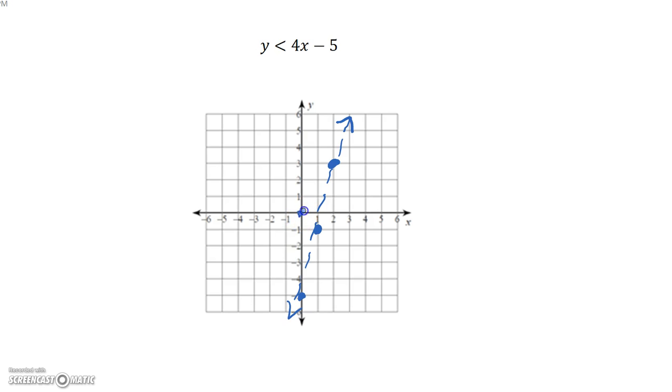And lastly, we're going to test our point. Again, I love to test the point 0, 0. We're going to plug that in for our x and y and see if it's true. So we have 0 is less than 4 times 0 minus 5. 0 is less than 0 minus 5. 0 is less than negative 5.